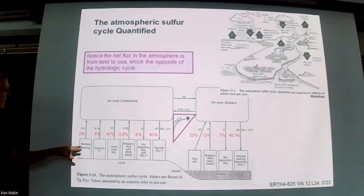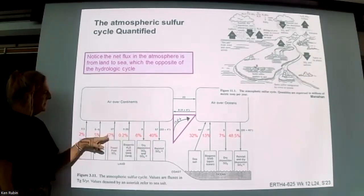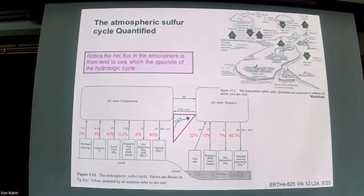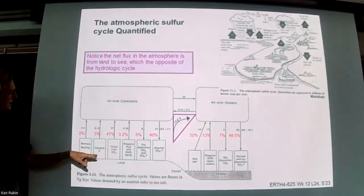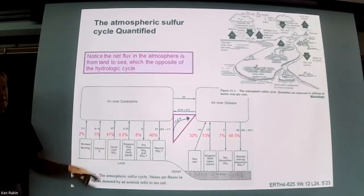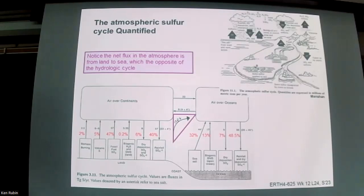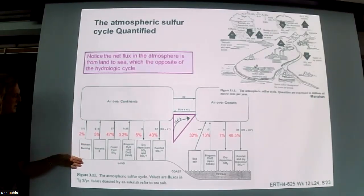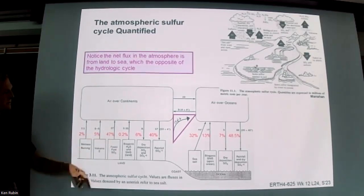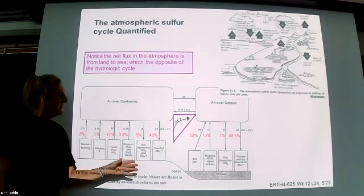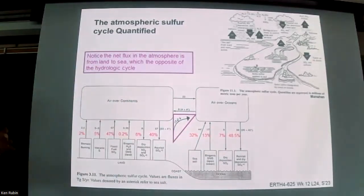Converting fluxes given in teragrams of sulfur per year into percent makes it easier to see the contributions: volcanic sulfur, biogenic sulfur, dry deposition, dissolved sulfate, and fossil fuel sulfur — which accounts for about 50% of the total cycle. Biomass burning, greatly enhanced by tropical deforestation, is around 2% — small compared to fossil fuels at 47%. The lion's share deposited into oceans comes as dissolved sulfate ions or dry deposition, while ocean outgassing — sea salt and DMS — is swamped by the incoming flux.